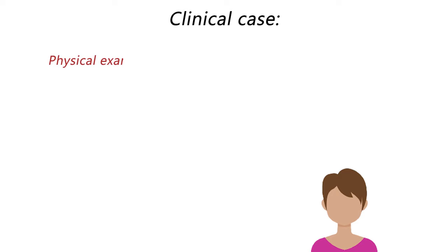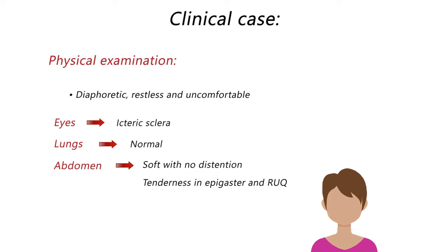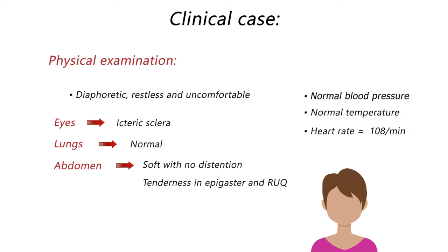On physical examination, she is diaphoretic, restless, and moving uncomfortably on the stretcher, but she is alert and can talk to the physician. The sclera of each eye is icteric. Her lungs expand normally and are clear on auscultation. The abdomen is soft with no distension but has tenderness on palpation in the epigastric area and right upper quadrant. She has normal blood pressure, normal body temperature, and is tachycardic with a heart rate of 108 beats per minute. Respiratory rate is 24 breaths per minute.